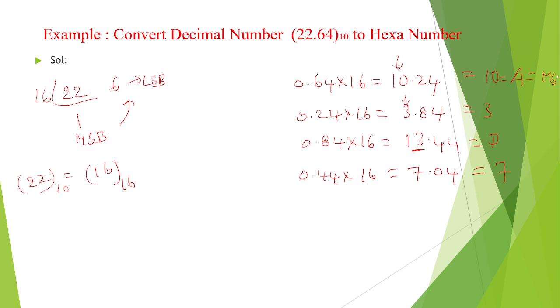So now the total result can be written as 22.64 of base 10 is equal 16 point, that is MSB is A, 3, D, 7 of hexadecimal number 16.